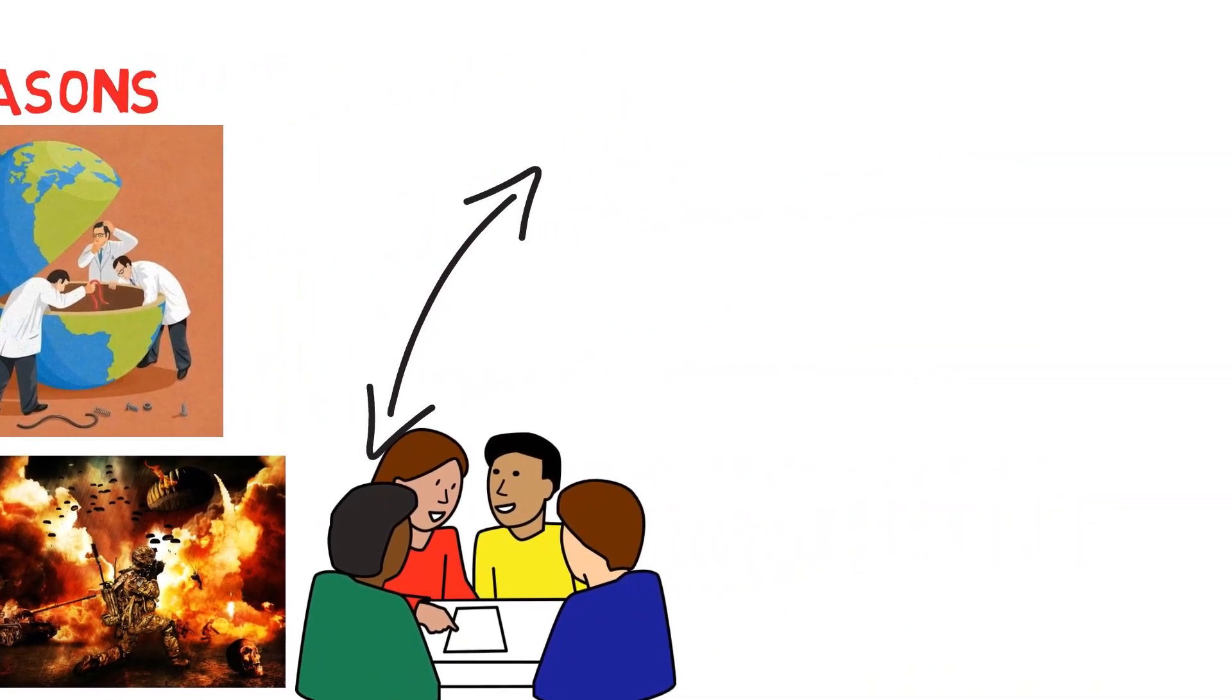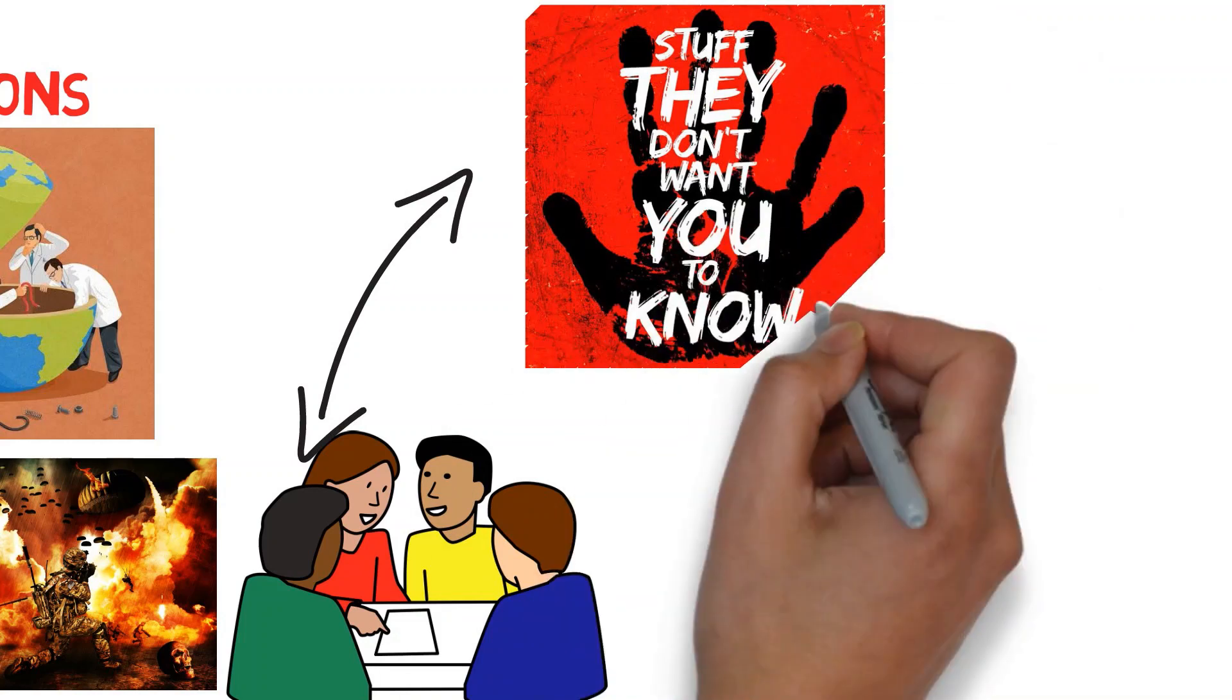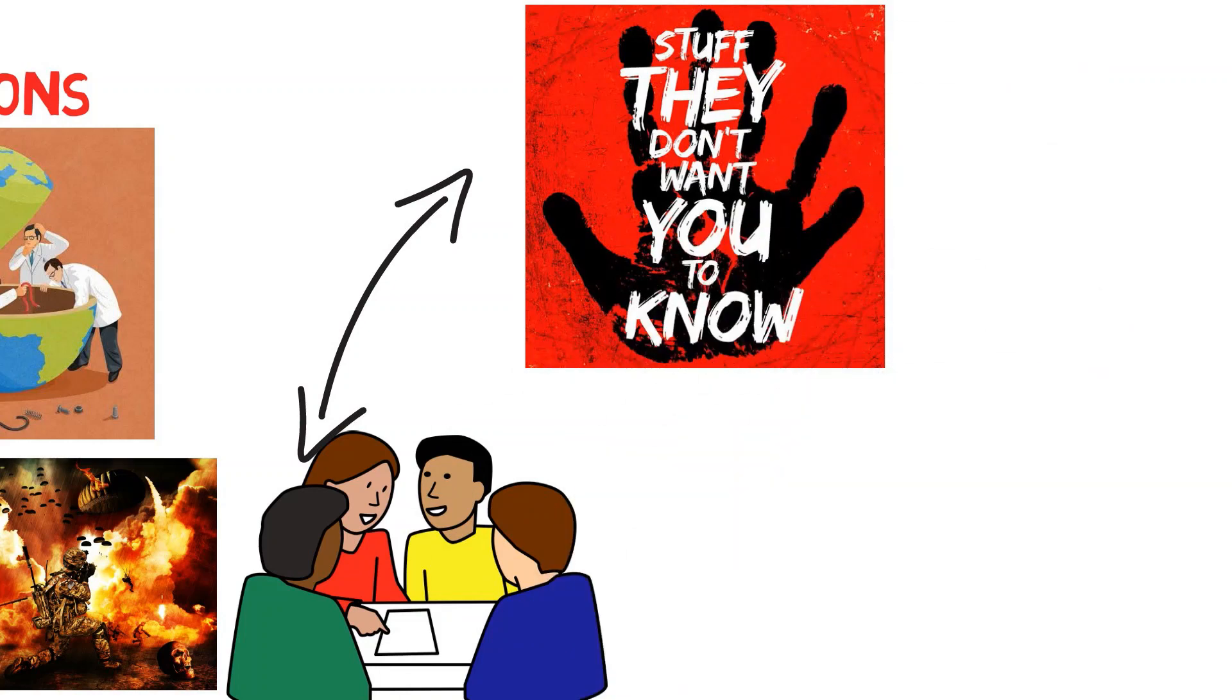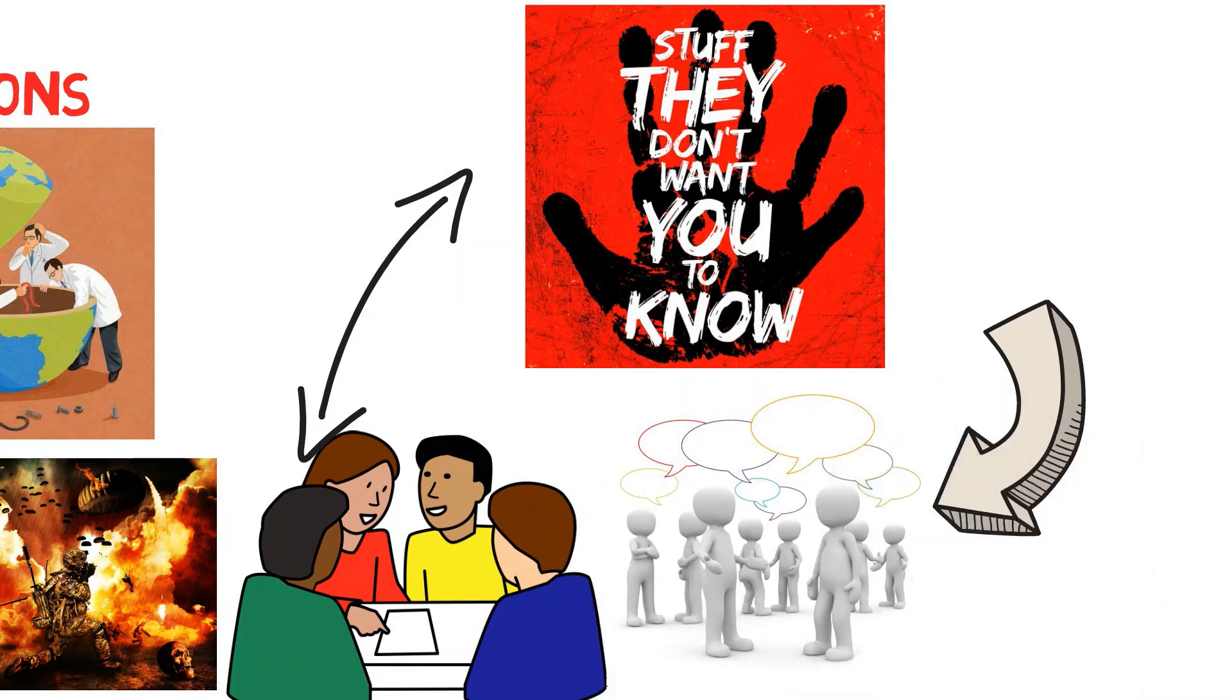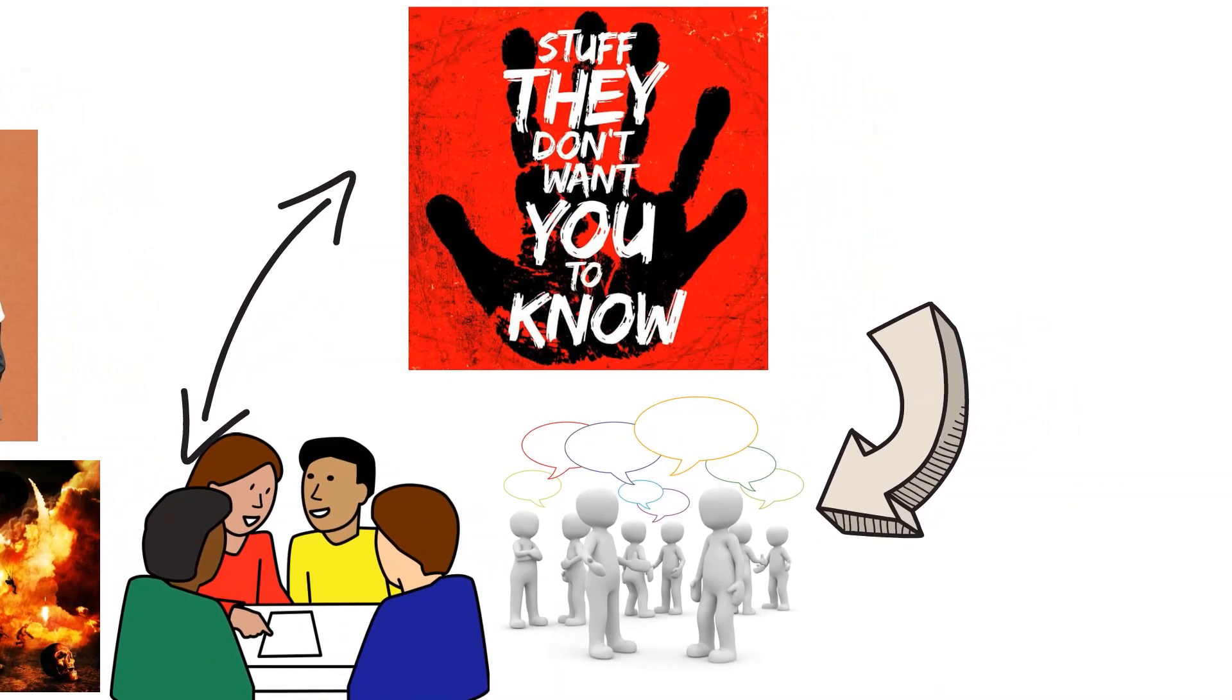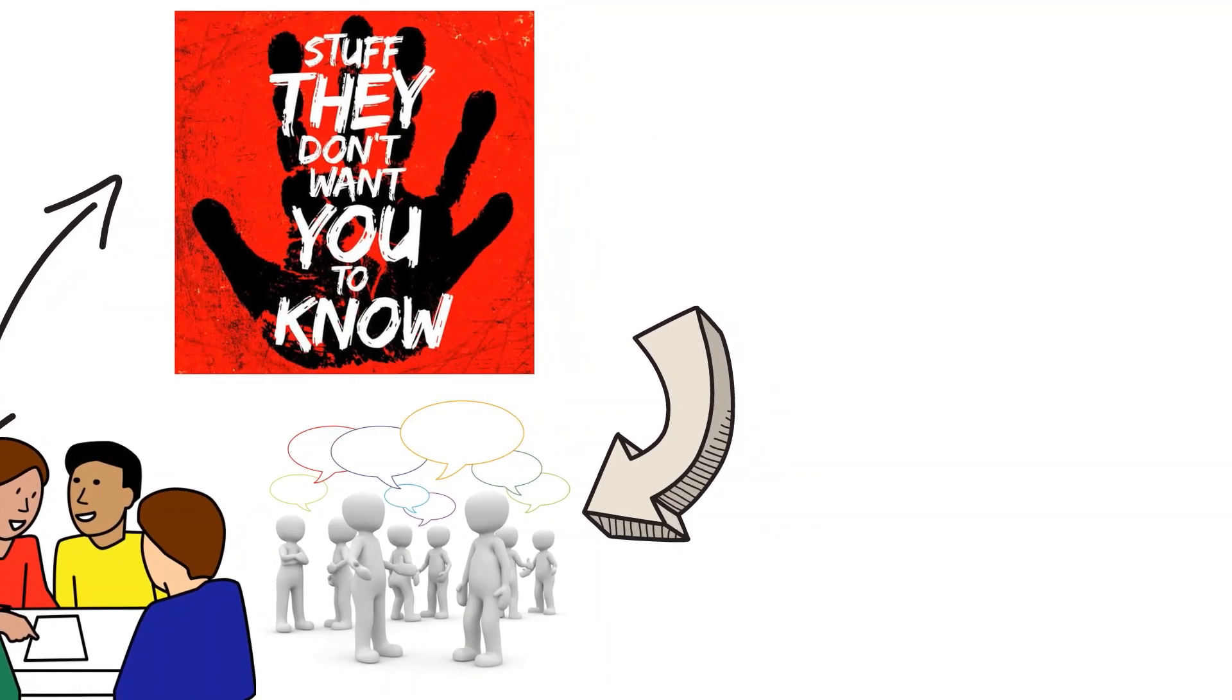Conspiracy theories offer explanations that provide this connection. They also suggest that the underlying causes are hidden from public view. When confusing things happen, believers can then assume that it is because they are being intentionally deceived by outside forces.